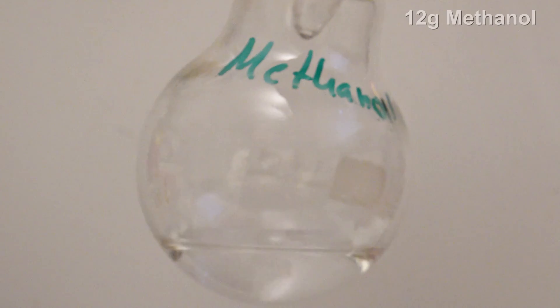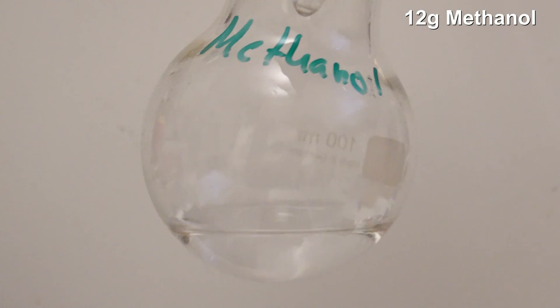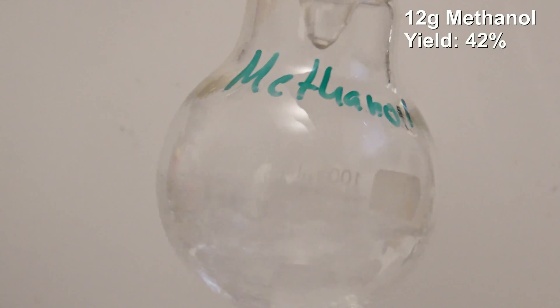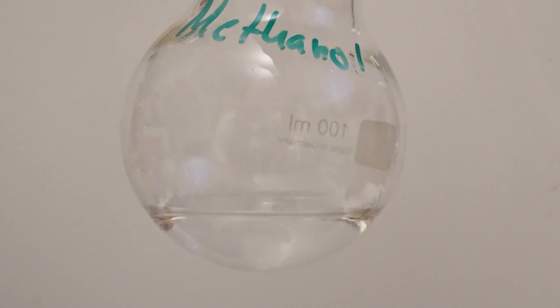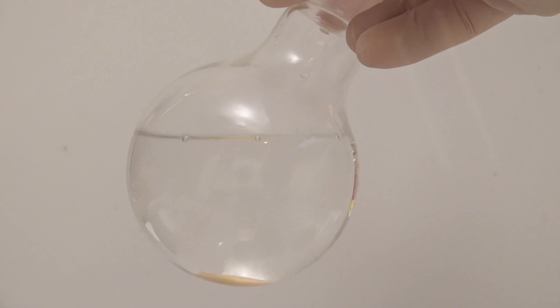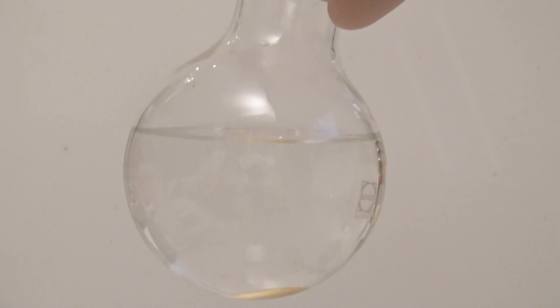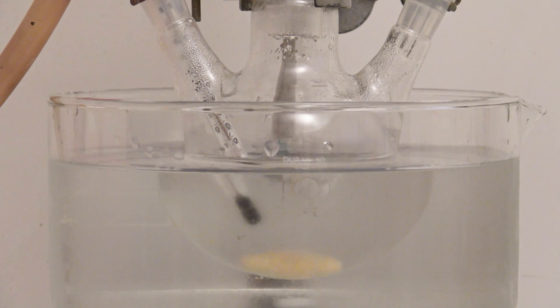This means that 12 grams of methanol were obtained in total, which corresponds to a yield of 42%. A reason for the low yield might be that in the first distillation, the methanol cannot be distilled off completely. The concentration of the hydroxide solution could be increased, but this would also cause it to attack the glassware more. By boiling down the residual solution of the first distillation, potassium acetate can be obtained very easily, but I didn't need it.